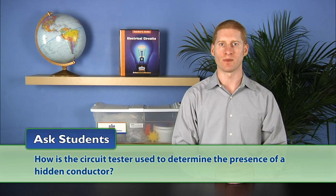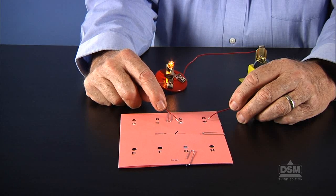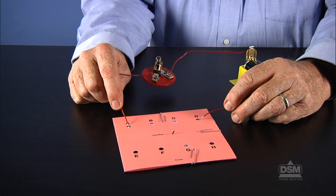Finally, ask students, how is the circuit tester used to determine the presence of a hidden conductor? What is the purpose of the bulb in the circuit tester? Students should respond that a circuit tester with a bulb can be connected to two points. If the bulb glows, the two points are in fact connected. If the bulb does not glow, the points are not connected.